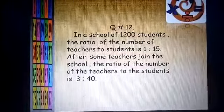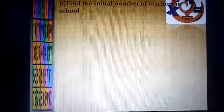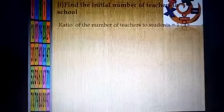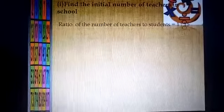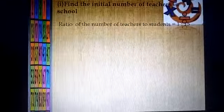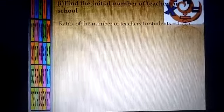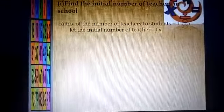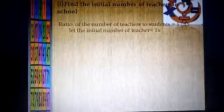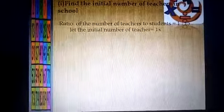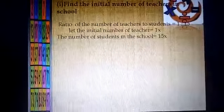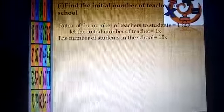Now we have to find the initial number of teachers in the school. The ratio of teachers to students is 1:15, where the ratio of teachers is 1 and the ratio of students is 15. Let the initial number of teachers be 1x, and let the number of students be 15x.